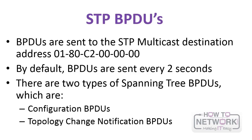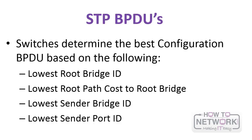BPDUs are sent to the STP multicast destination address, and by default they are sent every two seconds. There are two types of BPDUs: configuration BPDUs and TCNs, or Topology Change Notification BPDUs. Switches determine the best configuration BPDU based on the following criteria: lowest root bridge ID, root path cost to the root bridge, sender bridge ID, and sender port ID.